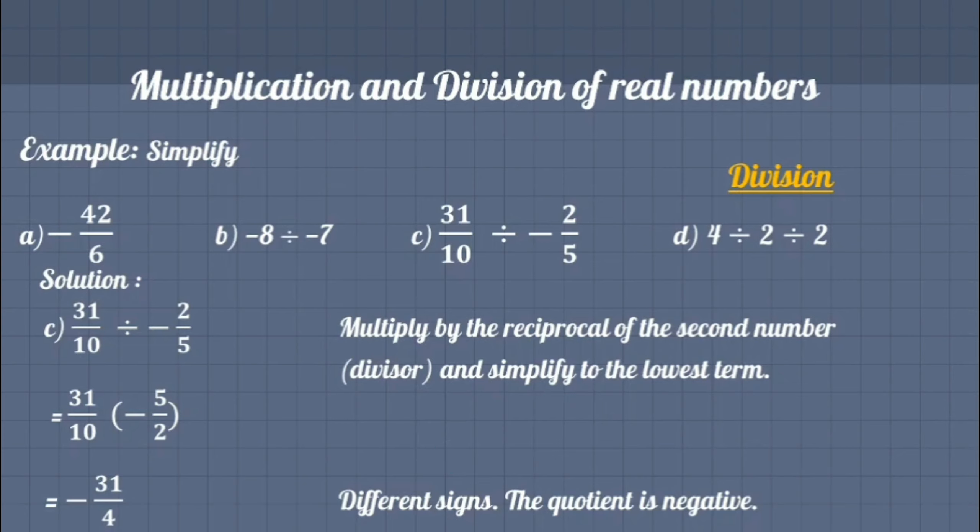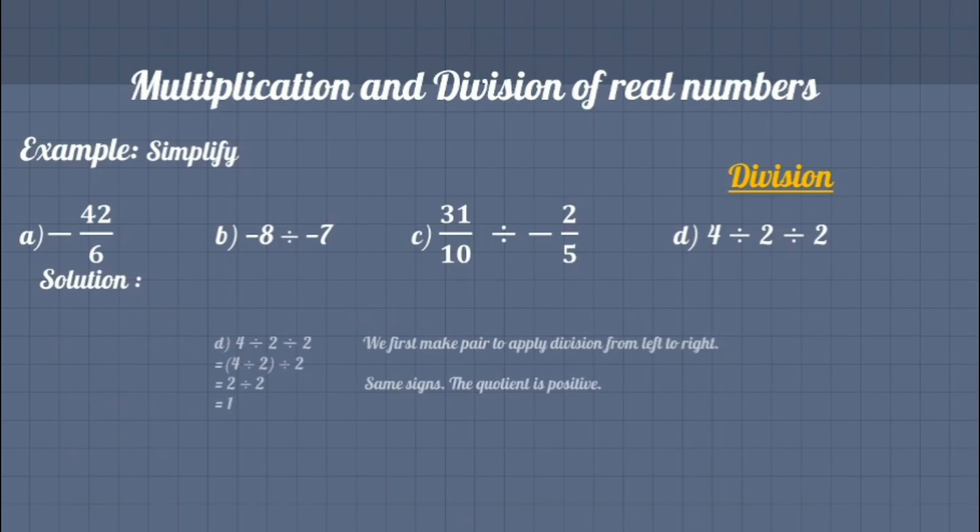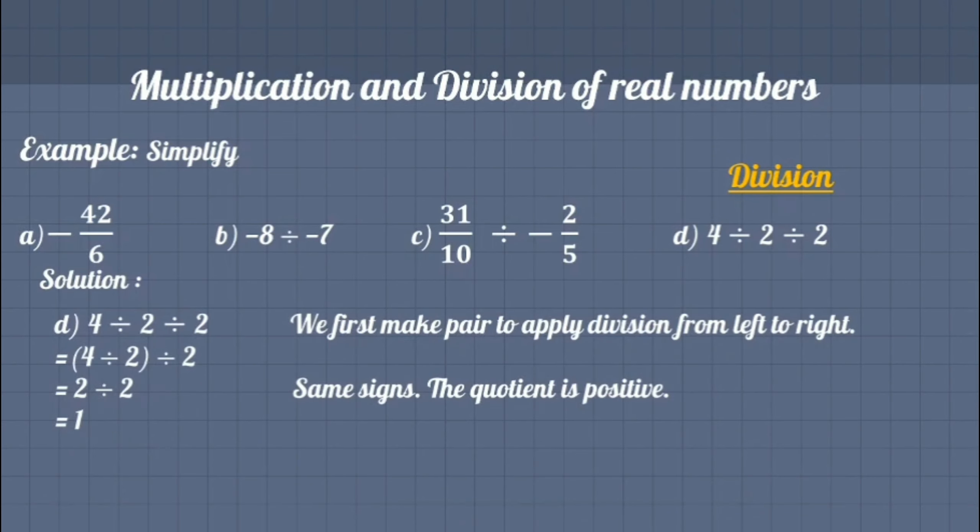But when we have more than two numbers, in this case we first make some pairs to simplify the expression, and then apply the operation of division from left to right.